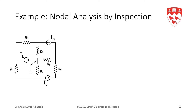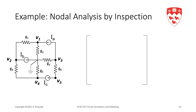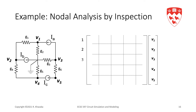Let's illustrate with a second example circuit. We identify and number the nodes: in this case there are five nodes — V1, V2, V3, V4, and V5. We already know we'll have five equations and five unknowns, giving a 5×5 G matrix. Let's number the rows and columns accordingly.